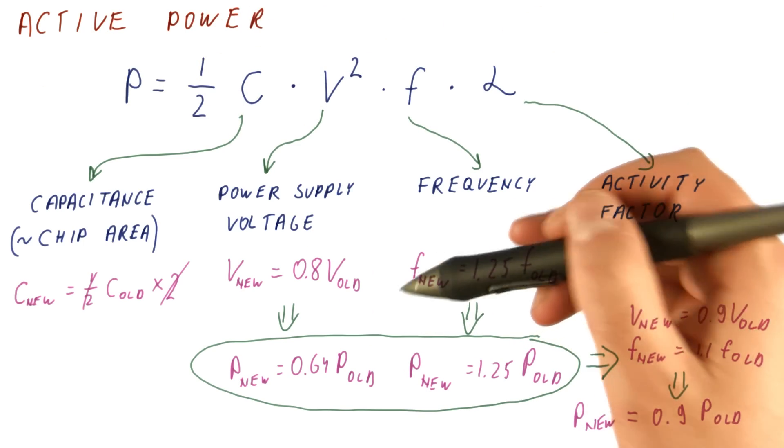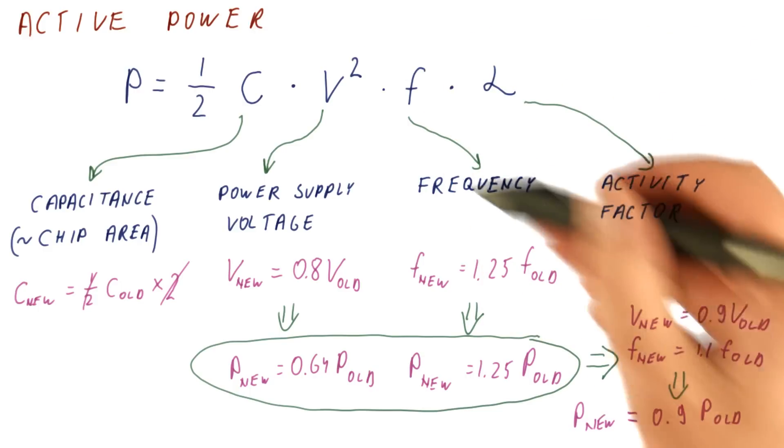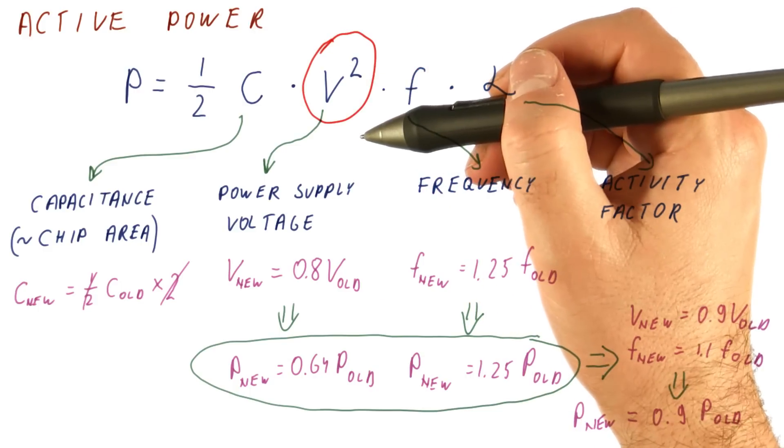This is why it's so important for active power to have the technology improvement, reduce the size of transistors. And we also have to realize that in order to get power improvements, we really need to lower the voltage.